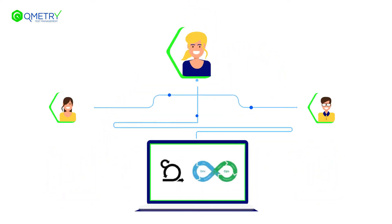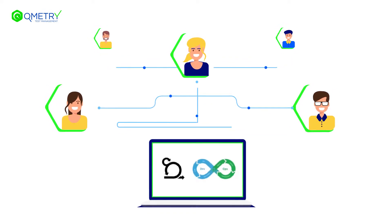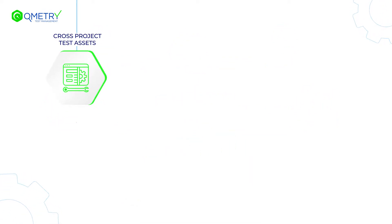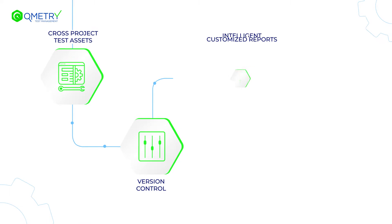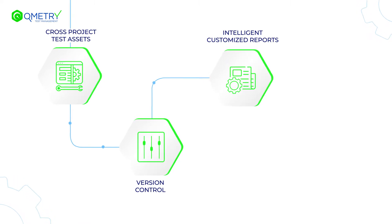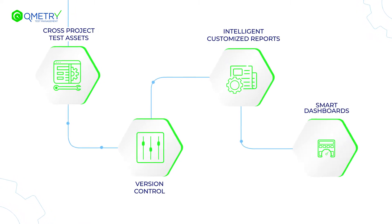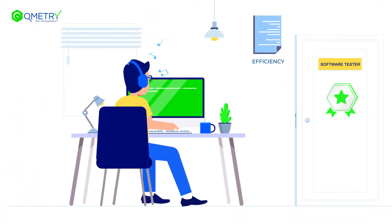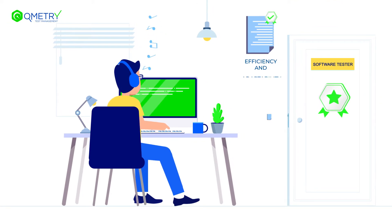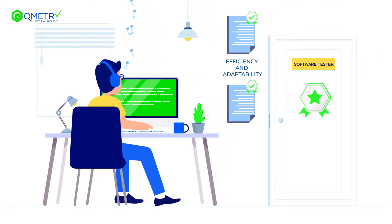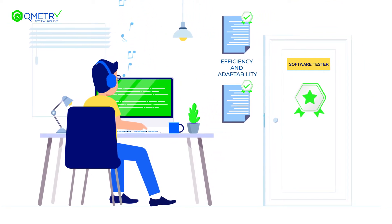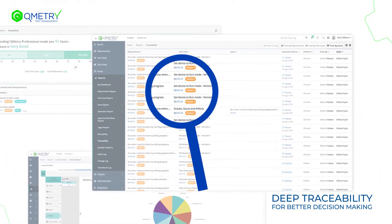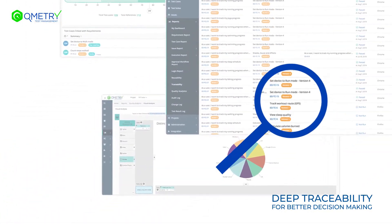Its collaborative platform for agile and DevOps teams offers reusable cross-project test assets, version control, intelligent customized reports, and smart dashboards. These offer Brad the efficiency to meet deadlines while adapting perfectly to Brad's evolving work environment. Qmetry improves decision-making by providing deep traceability.